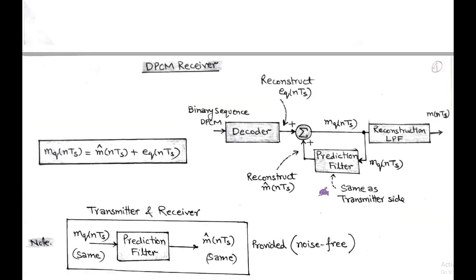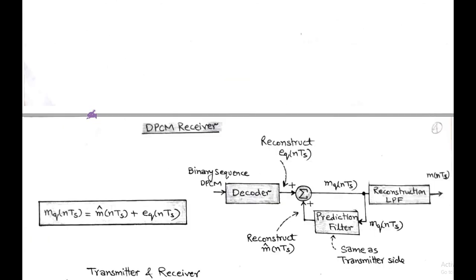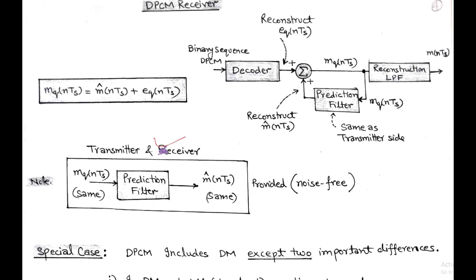At the receiver side, the binary sequence of differential PCM is received and passed through the decoder. The decoder decodes the signal and reconstructs the quantized version of the prediction error E_Q(NTS). The prediction filter reconstructs the prediction value M-hat(NTS) for a given input signal M_Q(NTS), where M_Q(NTS) equals M-hat(NTS) plus E_Q(NTS) — the same as at the transmitter side. Thus, the prediction filter at both transmitter and receiver has the same input M_Q(NTS) and produces the same prediction M-hat(NTS), provided there is a noise-free environment.